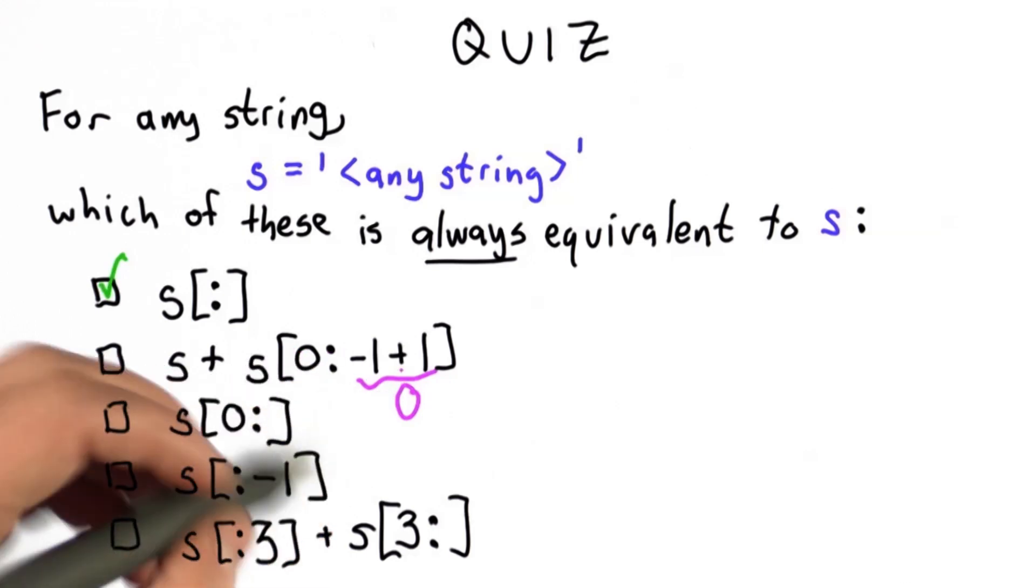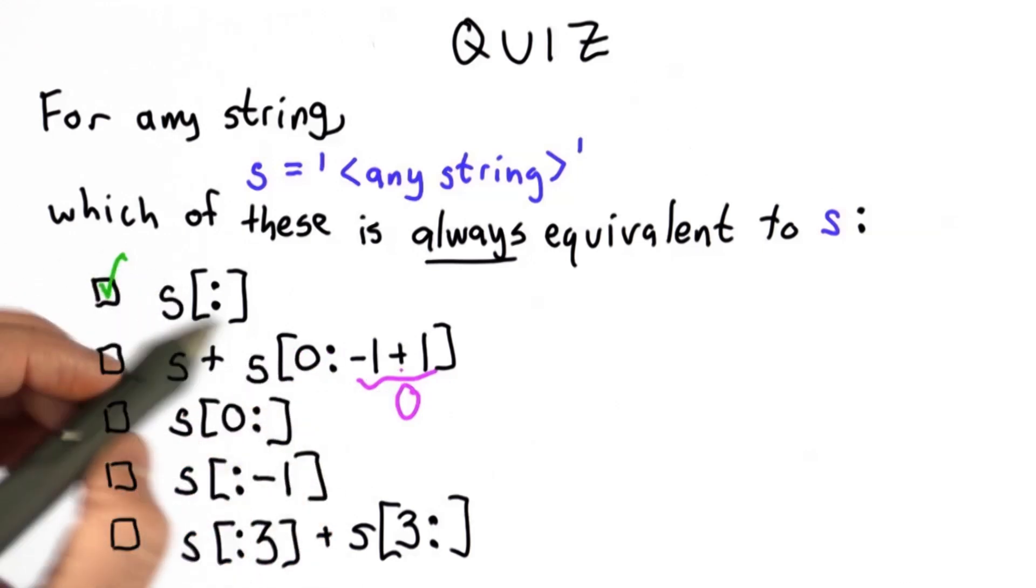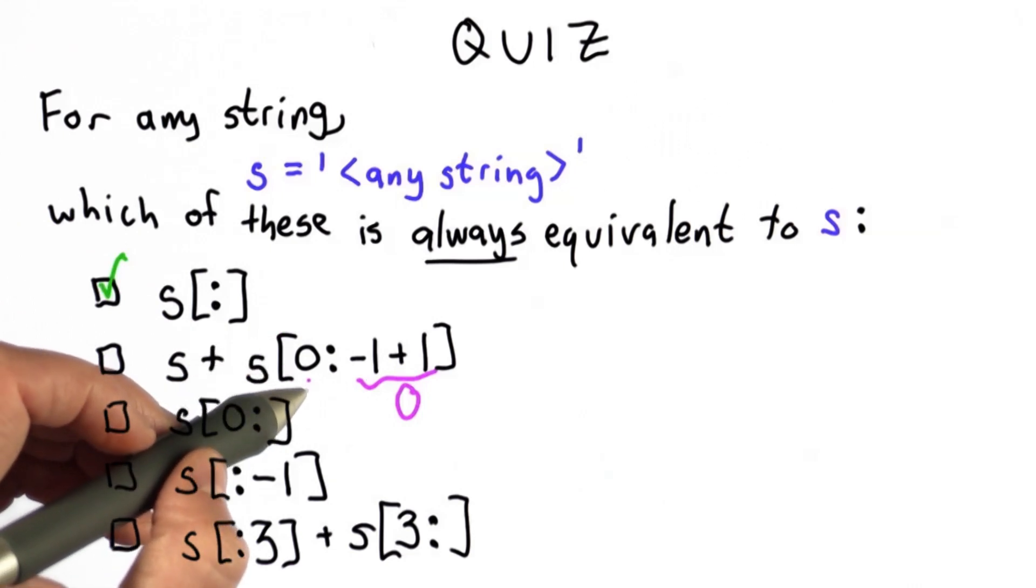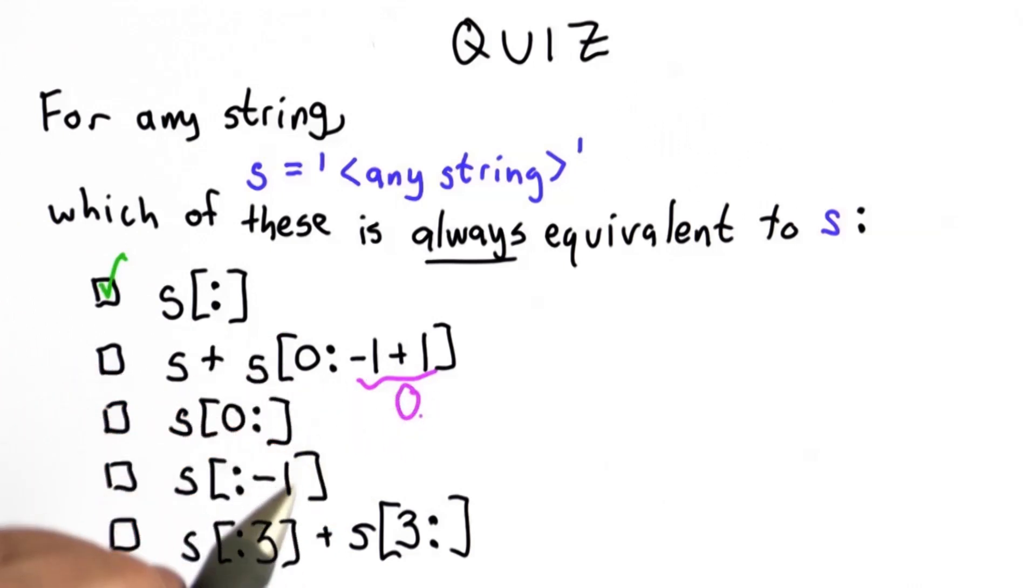When we index from 0:0, that's an empty string, because we're starting from 0 and stopping just before 0. There are no characters between 0 and 0, so that's an empty string. Adding the empty string to s leaves the string unchanged.